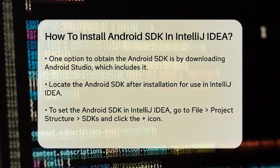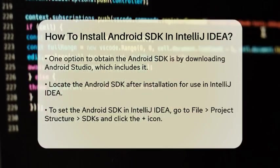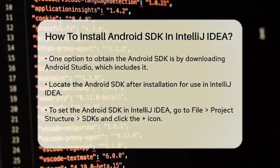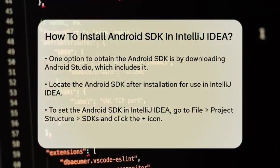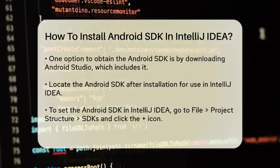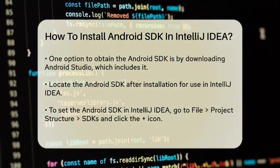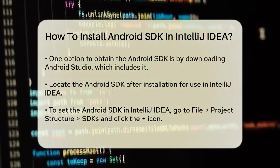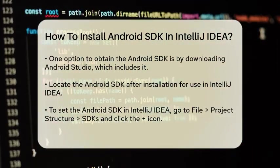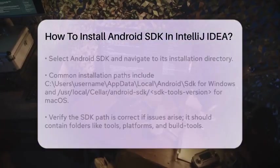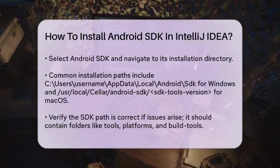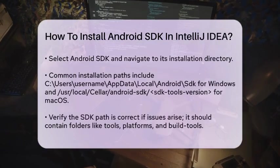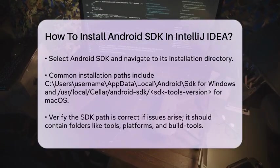To set the Android SDK in IntelliJ IDEA, go to File, Project Structure, SDKs, and then click on the plus icon to add a new SDK. Select Android SDK and navigate to the directory where the Android SDK is installed.